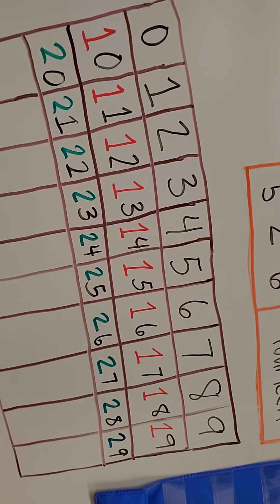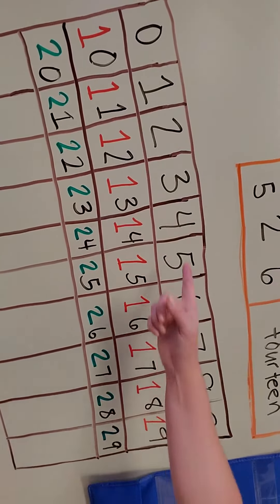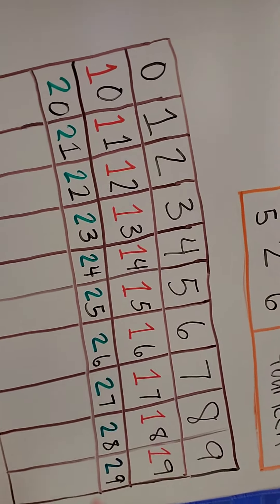See that pattern? Zero through nine. As long as you know your top zero through nine, you'll get the rest of the numbers.